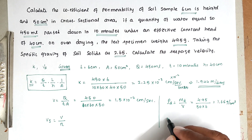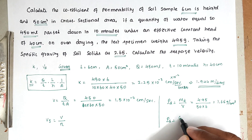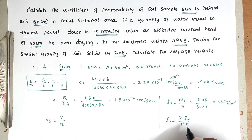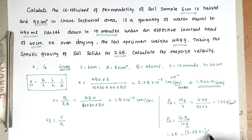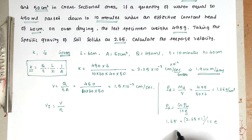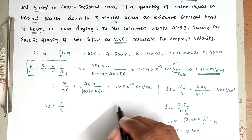Using the formula ρd = G × ρw divided by (1 + e), we substitute: 1.65 = 2.65 × 1 divided by (1 + e). The only unknown is e, so solving we get void ratio e = 0.606.